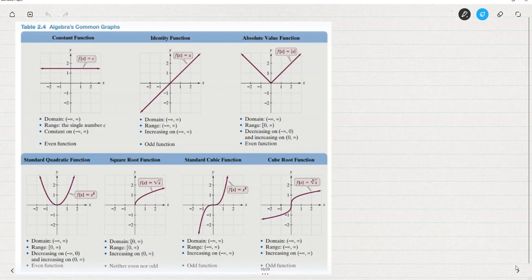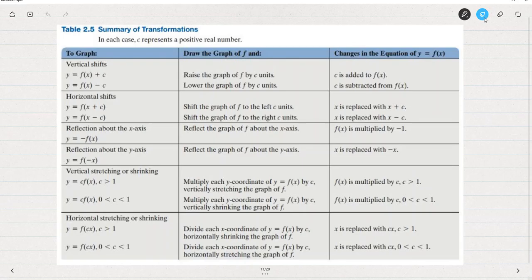What we've already done in the previous videos, we looked at the seven functions and their graphs, and then we did vertical and horizontal shifts. What we'll look at next is reflections about the x-axis, reflections about the y-axis, and then vertical stretching and shrinking, horizontal stretching and shrinking.